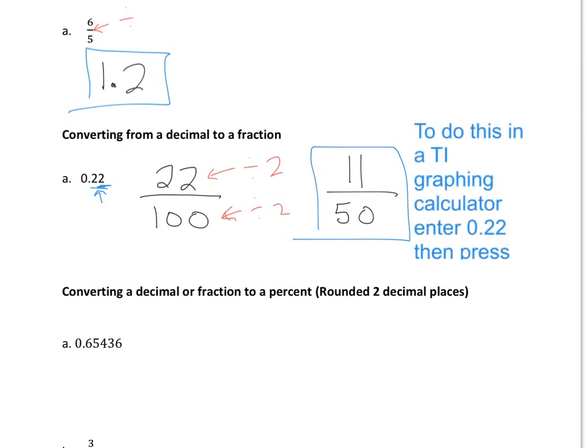Now, to be able to do this in a TI graphing calculator, you can see right here, I put the instructions. It's even easier in a graphing calculator. All you do is you're going to type 0.22 into the graphing calculator and then you're going to hit math, enter, enter. And you will be able to see if you click on this link up here, I'm going to actually put a link to another video where if you're not sure how to do this in the graphing calculator, go ahead and click that link and try that.